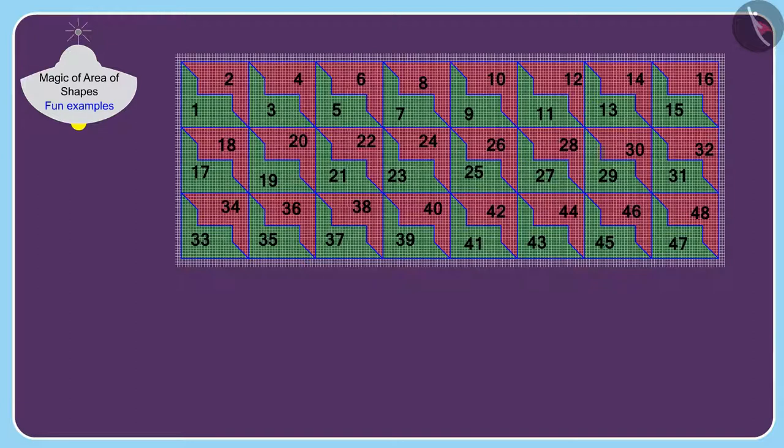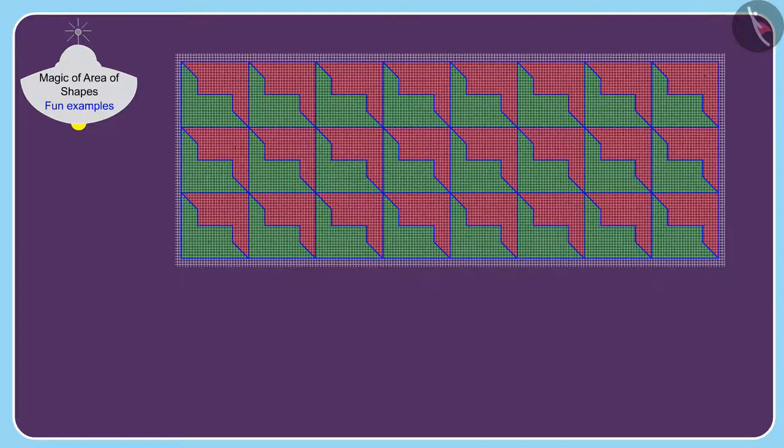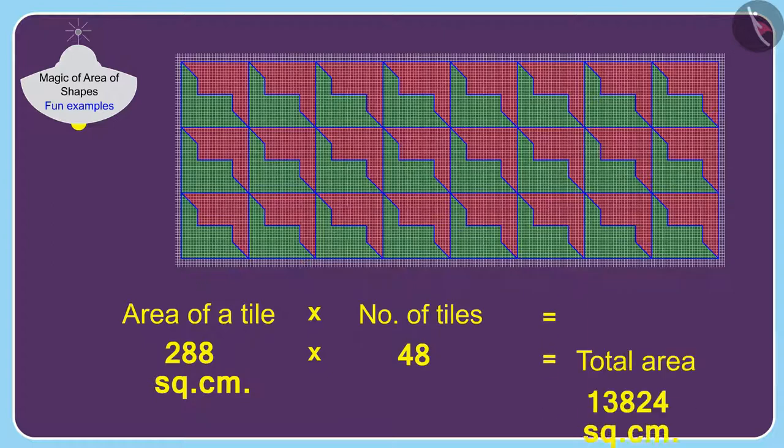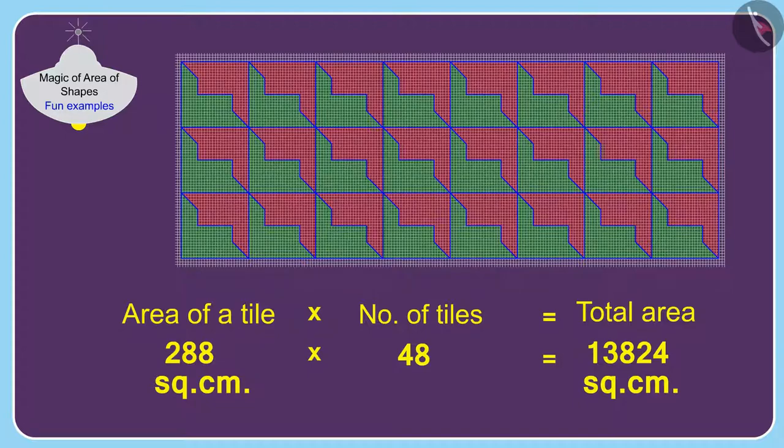Banno has used a total of 48 such tiles to decorate the wall. Therefore, the area of the wall will be 288 multiplied by 48, 13,824 square centimeters.